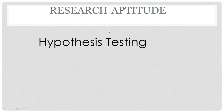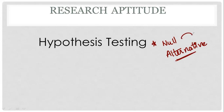Next, coming to research aptitude — hypothesis testing. Hypothesis testing is very important. After the exam, you have a 50% chance of getting questions from hypothesis testing. These are the two hypotheses: null hypothesis and alternative hypothesis. You will find the two characteristics. This is a statement-based question, not a direct question. This is about hypothesis testing.